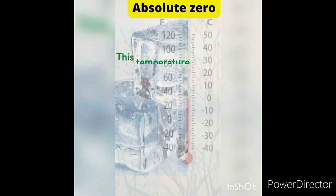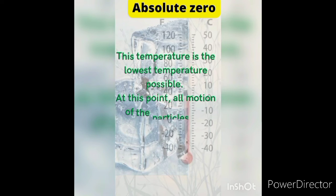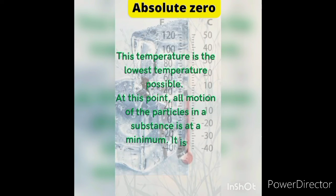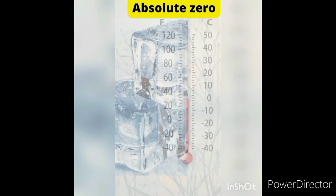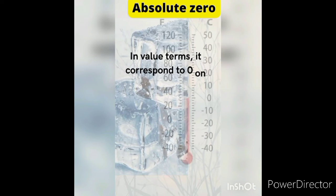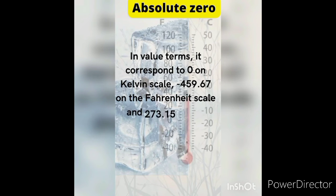Absolute zero is the lowest temperature possible. At this point, all motion of the particles in a substance is at a minimum. It is also known as the temperature at which pressure is zero. In value terms, it corresponds to zero on the Kelvin scale, minus 459.67 on the Fahrenheit scale, and minus 273.15 on the Celsius scale.